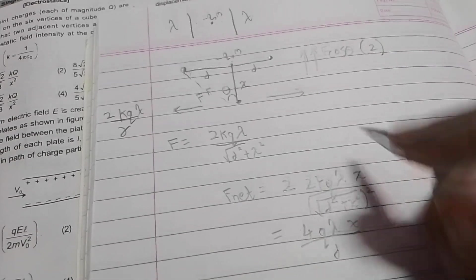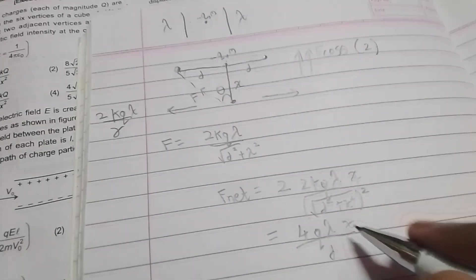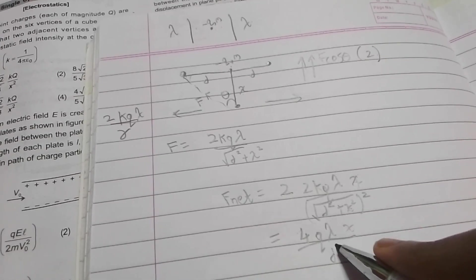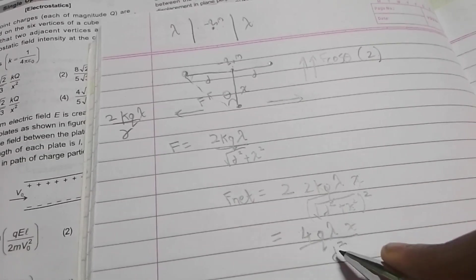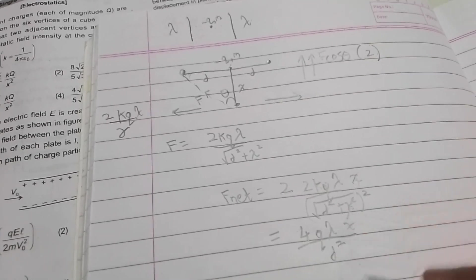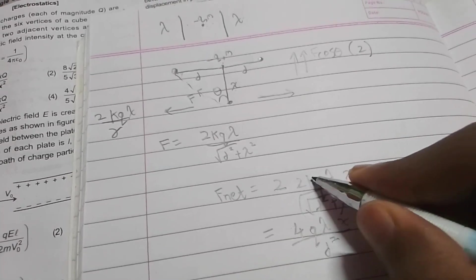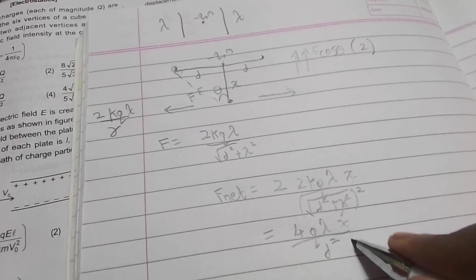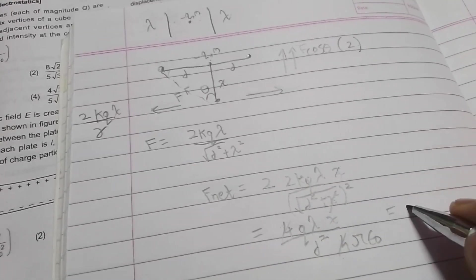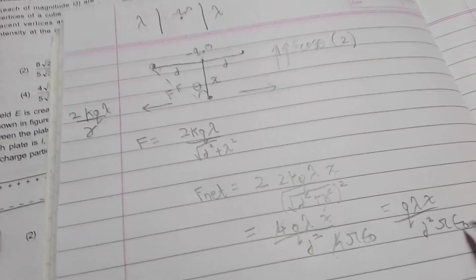Wait a second. They have said that x is very small. Of course, can you neglect x square in respect of d square? Yes, you can do so. We have d square left on neglecting this. Taking value of k as 1 by 4 pi epsilon naught, we have q lambda x by d square pi epsilon naught.